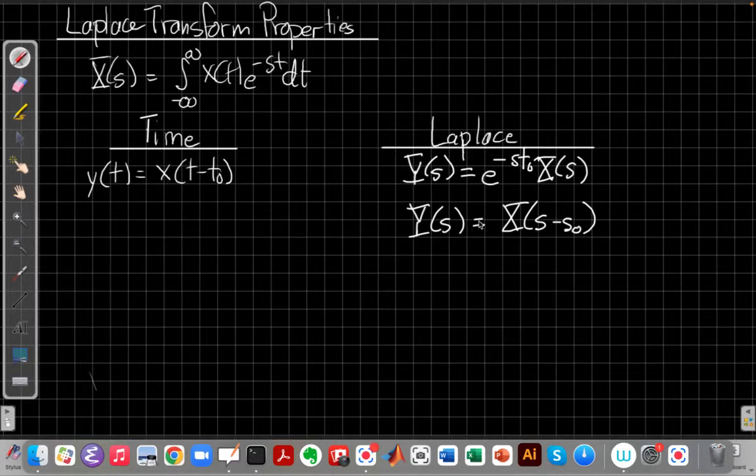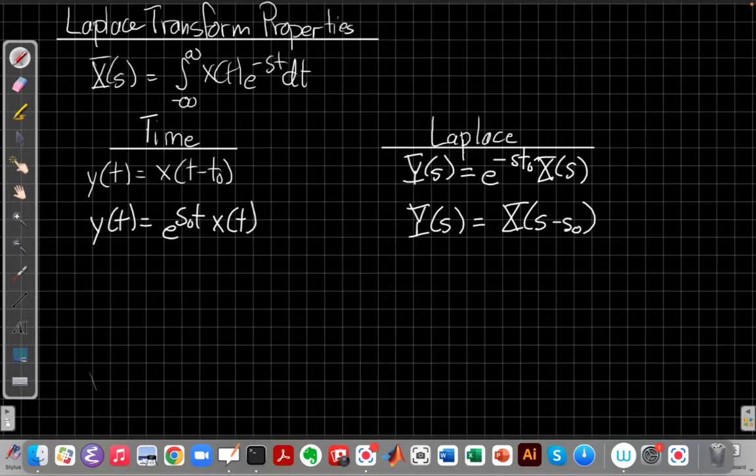And what if we have a shift on the Laplace side? So what if we say y of s is x of s minus s-naught? We subtract some s, what do you think is going to happen on the time side? Right, we'll get the same story that shifting in one domain is multiplying by a complex exponential in the other. And so we'll multiply by e to the s-naught t.